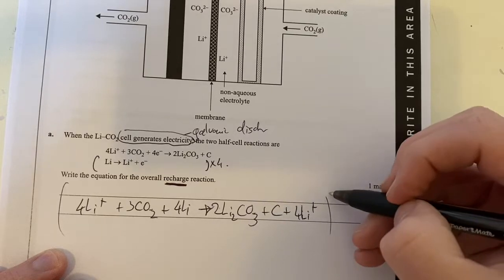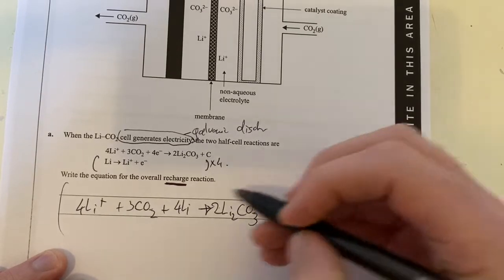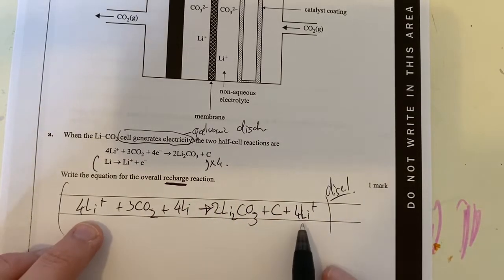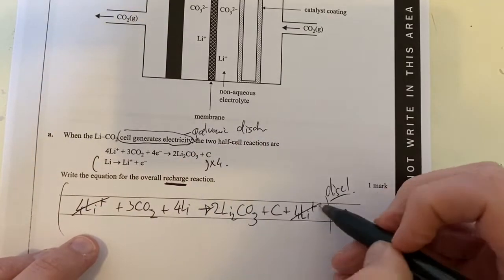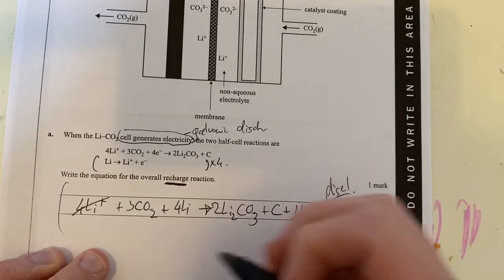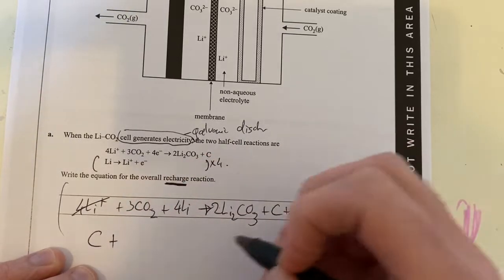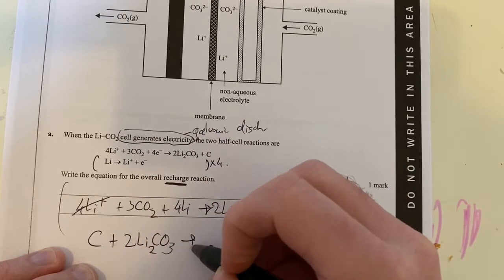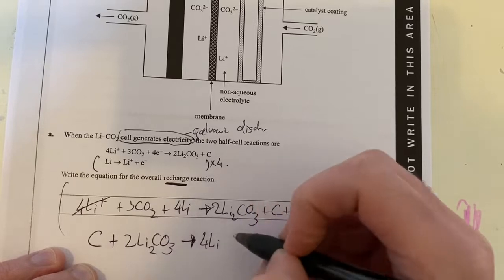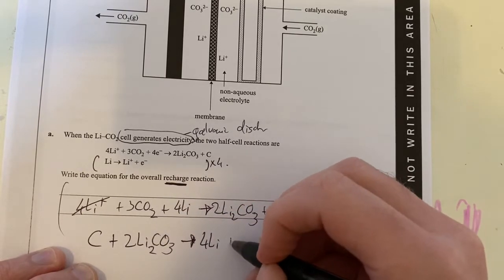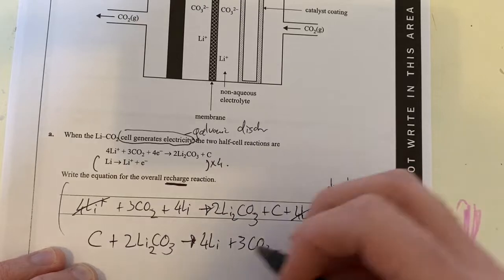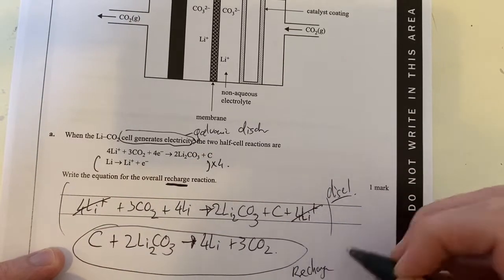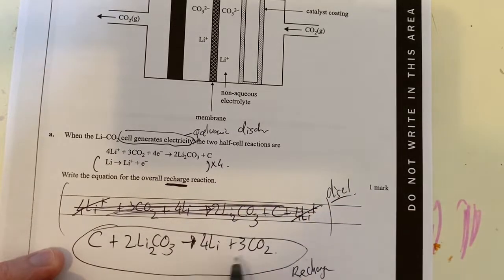This is the overall thing for discharge, so if I want recharge, I'm going to go back the other way. I'm also going to cancel down some of these ions which are on both sides. I can see these lithium ions are on both sides. So let's recharge this and say we're going to have our carbon reacting with two lithium carbonates, and that's going to form four lithium metal and three carbon dioxides. And this is going to be my recharge. So this is my discharge. I'm going to cross that out again because I need to know recharge.